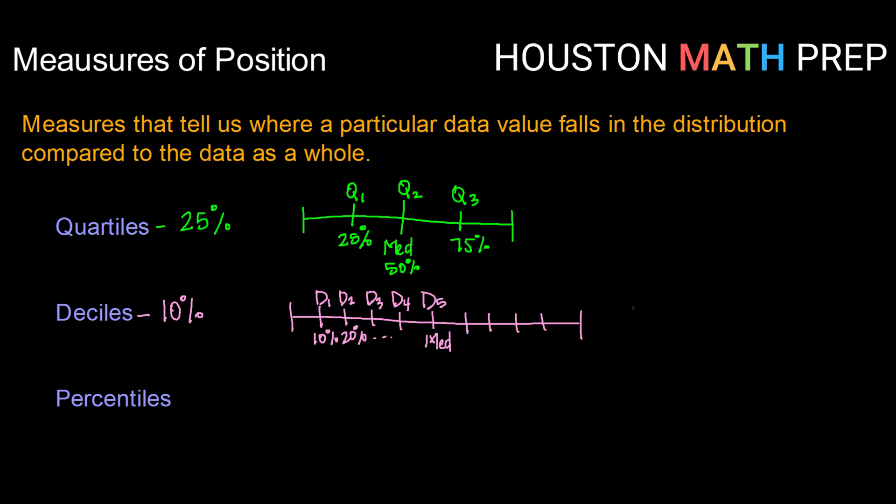If you want to find the decile that pertains to a particular value, you would calculate that by taking the number of values below the data value you were interested in, divided by the total number of data values, and multiply that by 10.